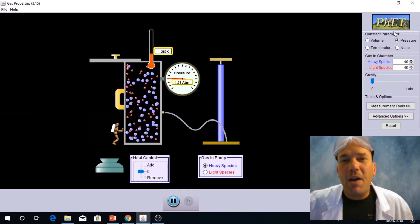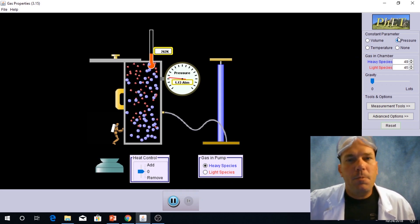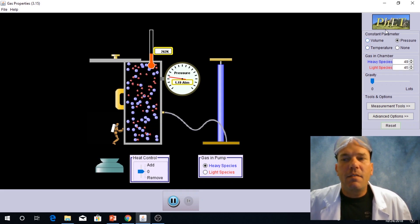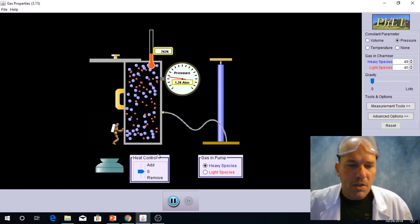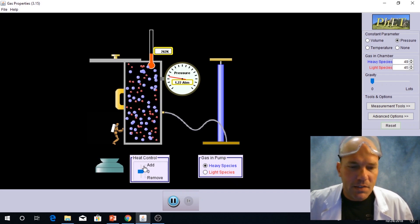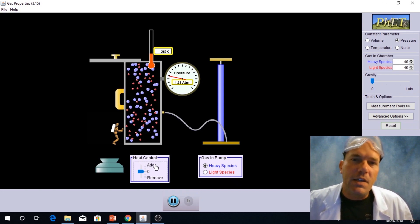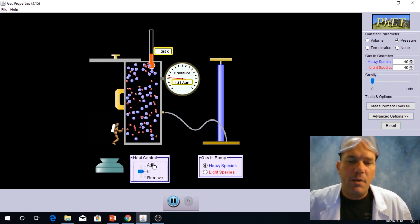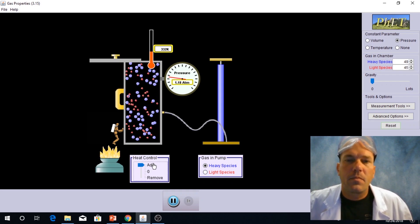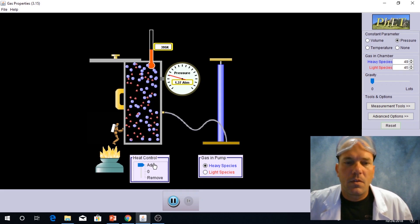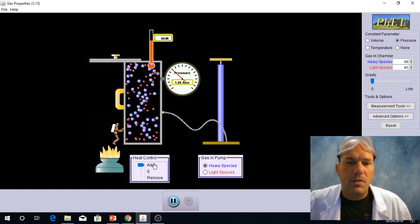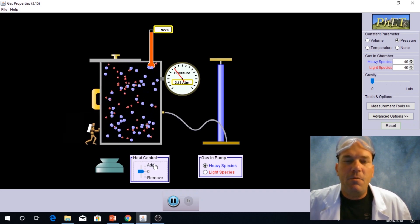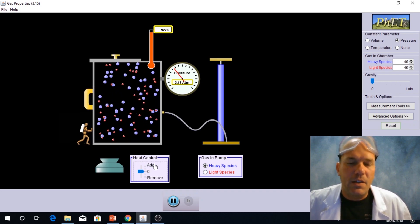So now let's see what happens when I hold pressure constant and I manipulate the volume and the temperature. So what I'm going to do now is add heat to the system, and we're going to see how the volume responds to an increase in temperature. Temperature is going up, and what do we see happening? We see volume increasing as a result.